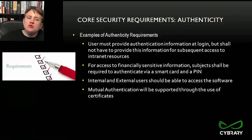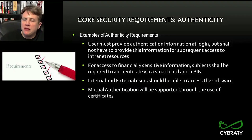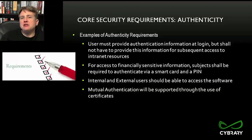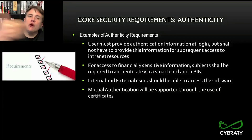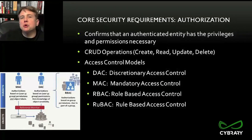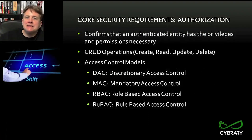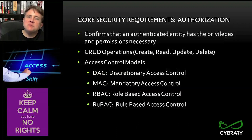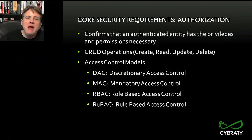We might also address multi-factor authentication and mutual authentication. Multi-factor authentication requires more than one factor — for example, a password plus a smart card, or a thumbprint plus a password. Mutual authentication means the client authenticates to the server, but the server also has to authenticate to the client. From authenticity, we also look at authorization — making sure the subject is authorized to access the object, but only has rights based on the principle of least privilege.